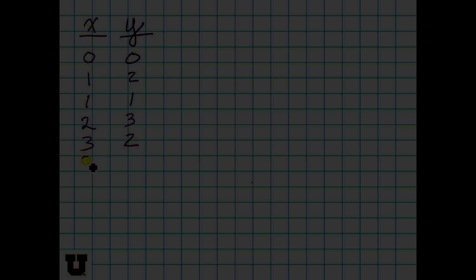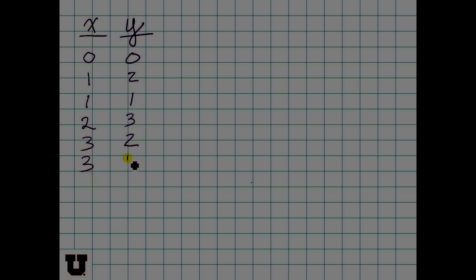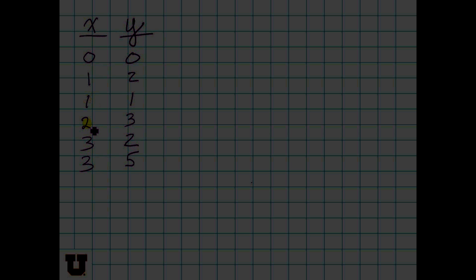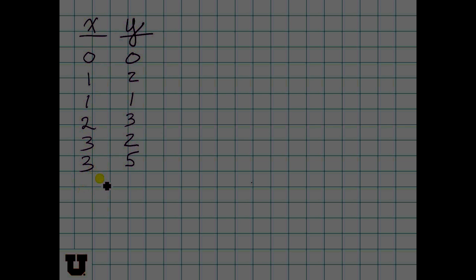0, 0, 1, 2, 1, 1, 2, 3, 3, 2, and 3, 5. So here we've got 1, 2, 3, 4, 5, 6 observations in total.